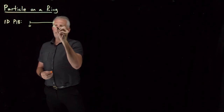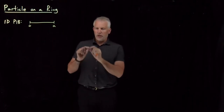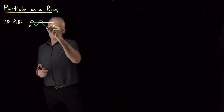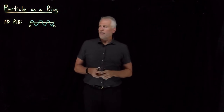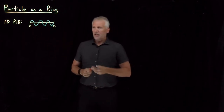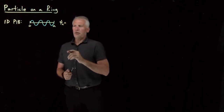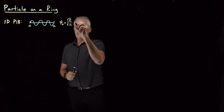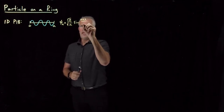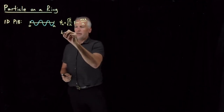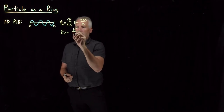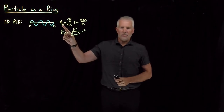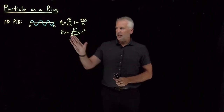If we take a particle and confine it to a one-dimensional box between 0 and A on some axis, then the particle has some wave function. Each of those wave functions has to hit zero at the edges of the box. Those wave functions had a particular mathematical form and a particular energy. Each different wave function — n equals 1, 2, or 3 — has a different wave function and a different energy. That's what we know about the particle-in-a-box.